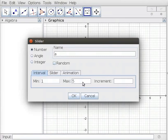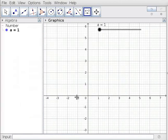Set min value as 1, max value as 5, and increment as 1. Click OK button. This creates a number slider named a.